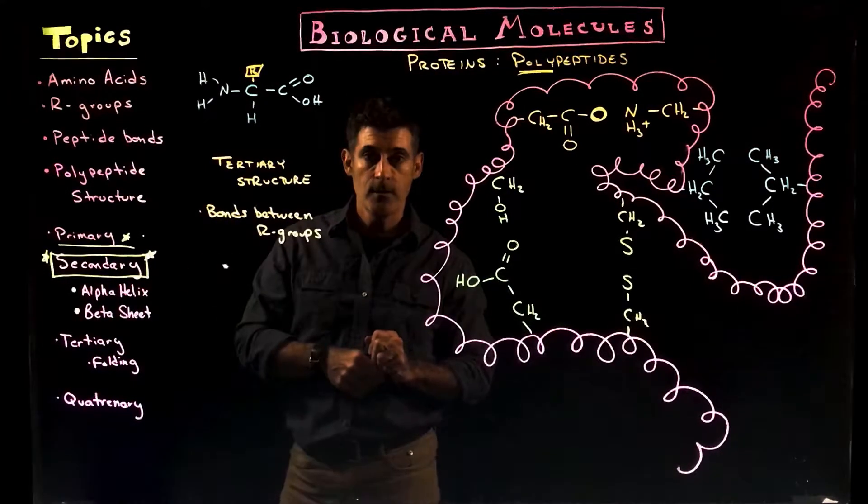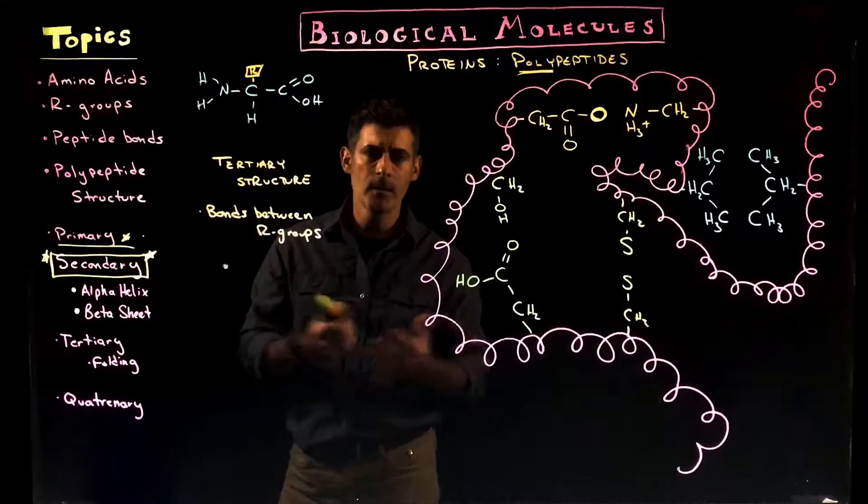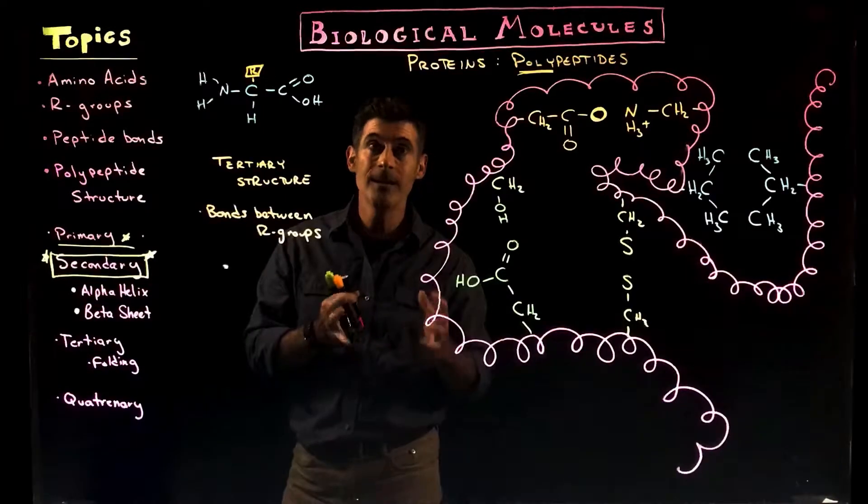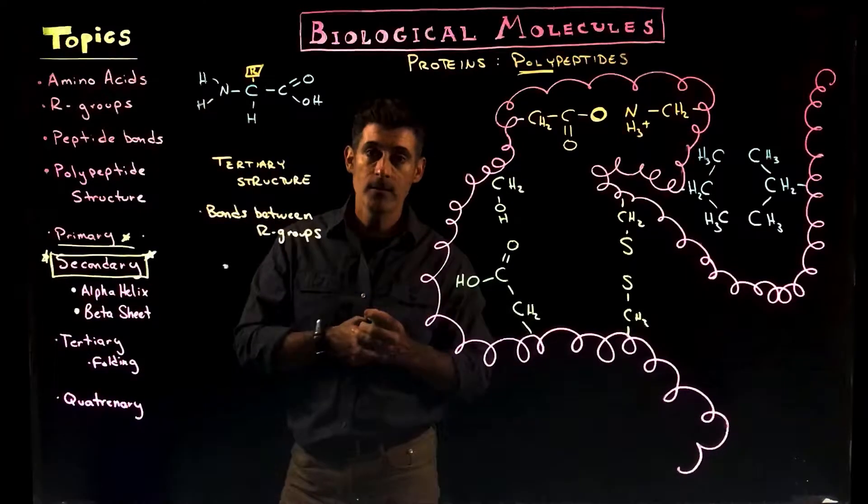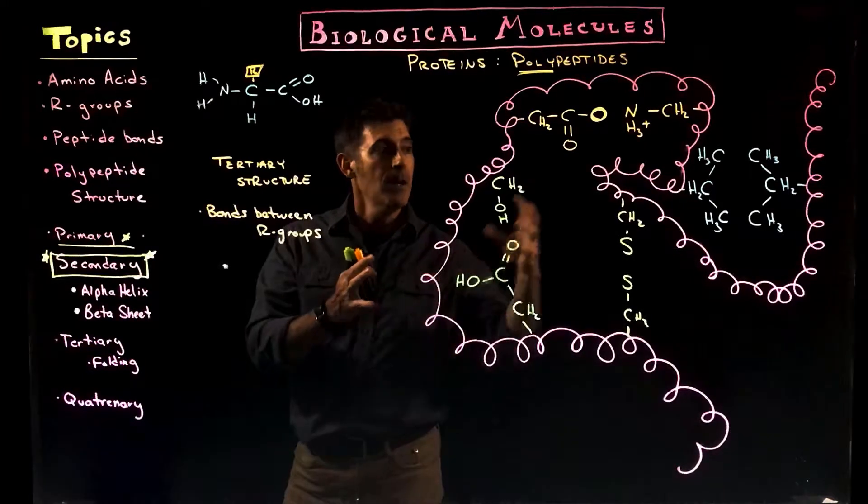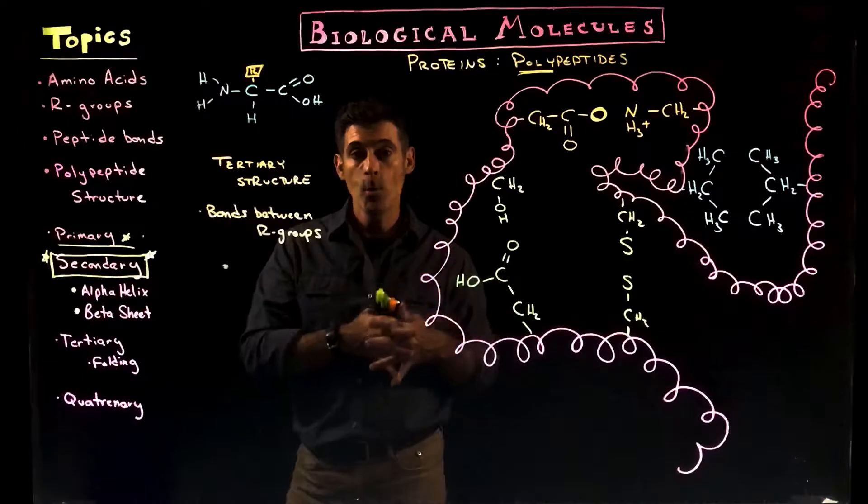And now we're up to tertiary structure, which is a complex three-dimensional folding that is incredibly unique for every protein. It's really what gives each protein its function and unique characteristic—its shape. The shape is then dictated by the types of bonds that form and hold that shape together.